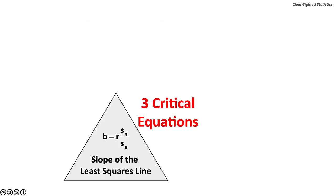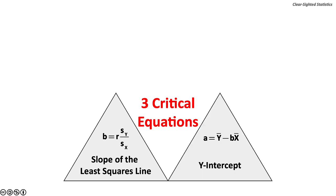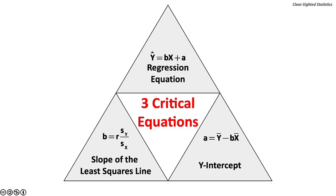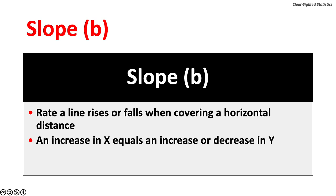There are three critical equations in linear regression. The first is the slope of the least squares line, B: B equals R times the standard deviation of the dependent variable, s-sub-Y, over the standard deviation of the independent variable, s-sub-X. The second equation is the Y-intercept, A: A equals the mean of the dependent variable minus the slope times the mean of the independent variable. The third equation is the regression equation, or Y-hat: Y-hat equals the slope B times X plus the Y-intercept A.